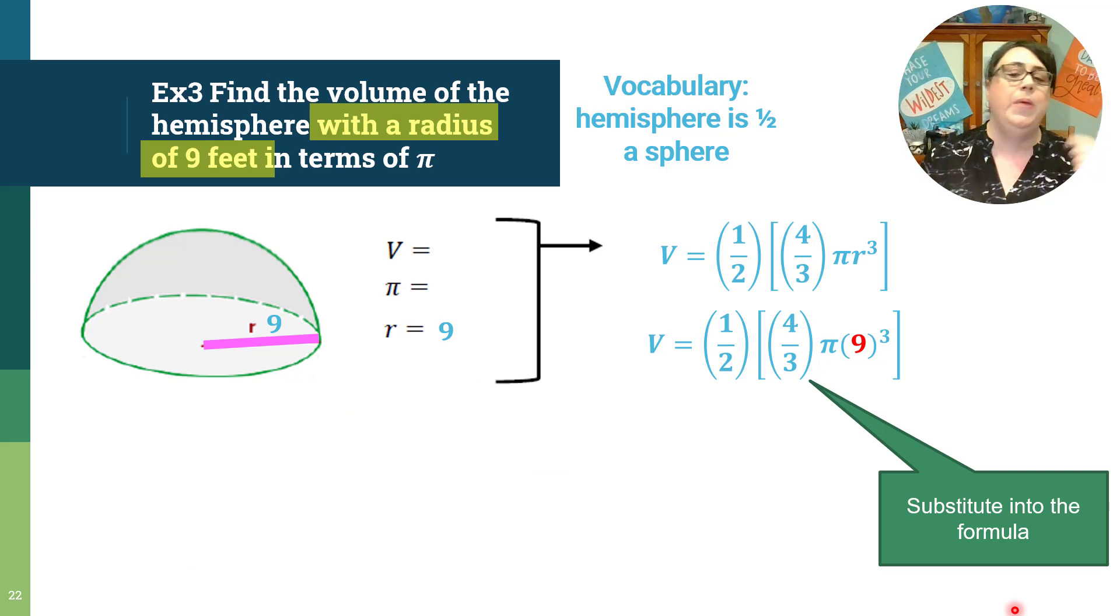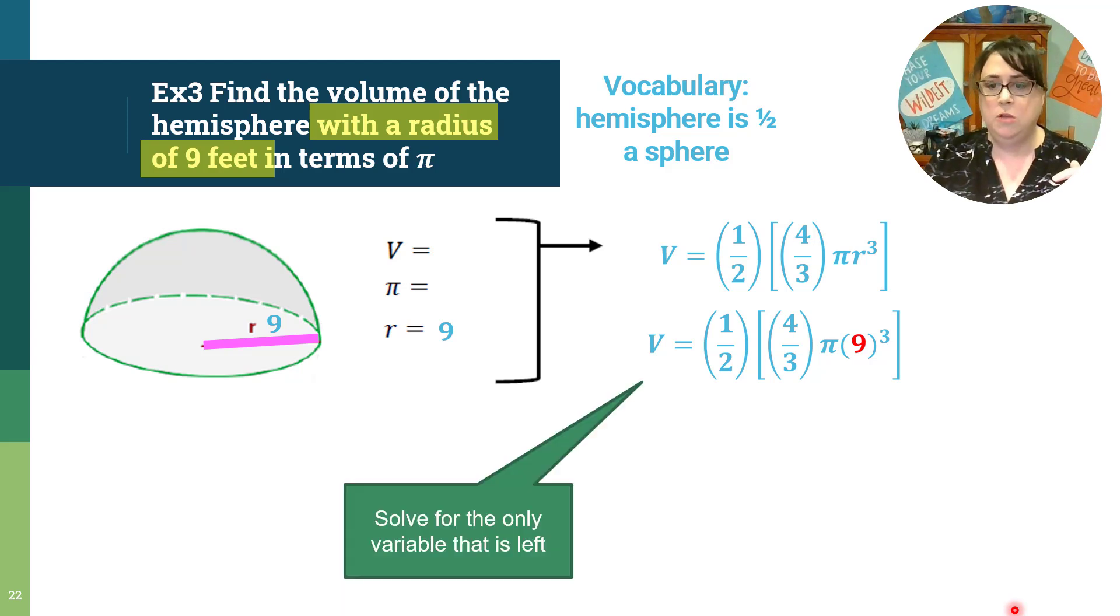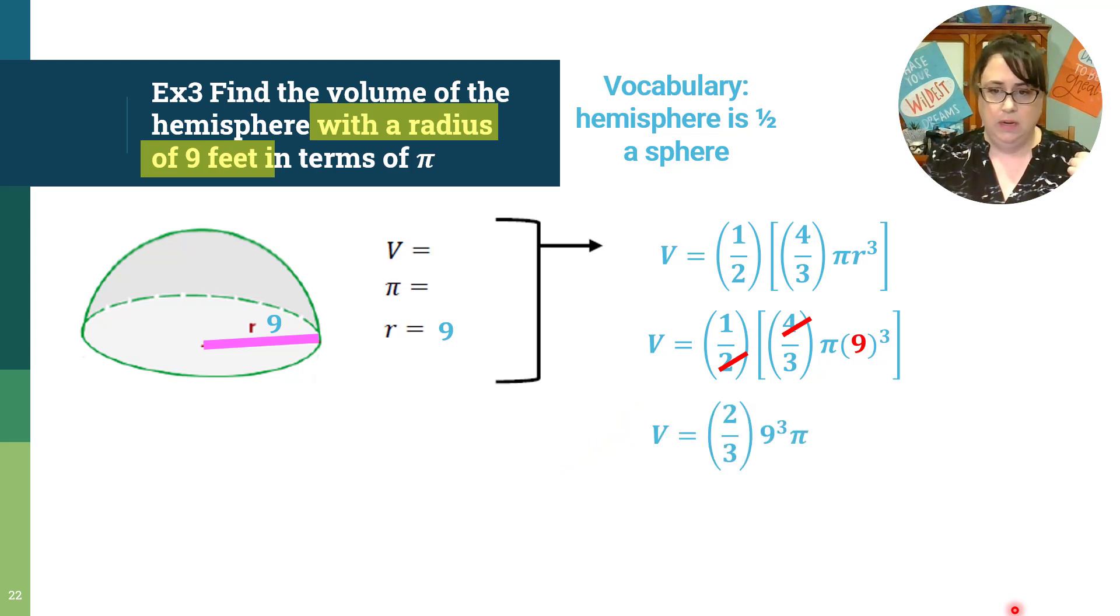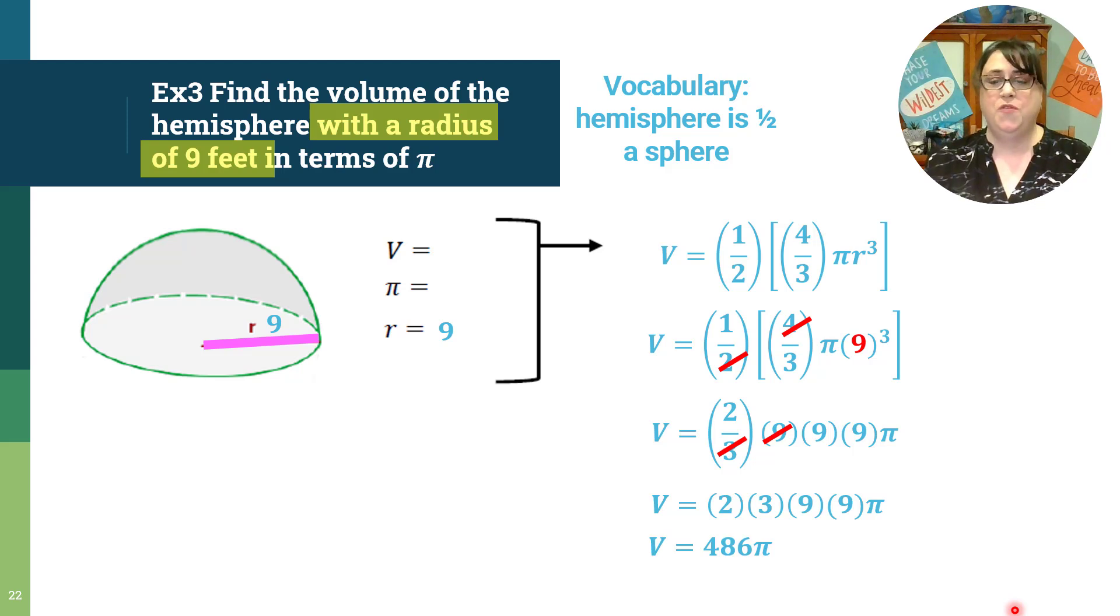Now chip away bit by bit what you know. Order of operations says do that 9 cubed first. Oh, I cheated a little bit. I got rid of the fraction if I could. I took one half of 4. So one half of 4 made that 2 thirds. I was supposed to do that first, but I knew that wasn't going to make my exponent different. I broke my 9 to the third power into 9 times 9 times 9. Because I know 3 goes into 9. I got rid of that fraction. So now I have 2 times 3 times 9 times 9, which is 486 pi.